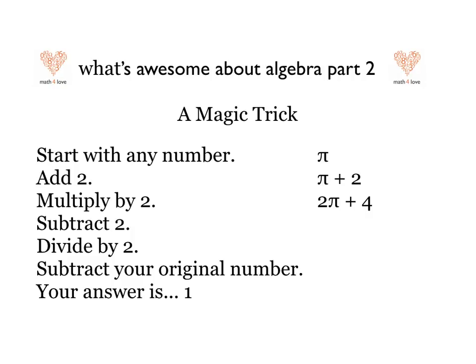Now we want to subtract 2. That's okay, because 2 pi plus 4 minus 2 — if you add 4 and subtract 2, that's the same as adding 2. So we subtract 2 and have 2 pi plus 2. Now the tricky part: we want to divide by 2. Half of 2 pi is just pi, and half of 2 is 1, so we get pi plus 1. And now we subtract our original number, which was pi. We're left with 1.